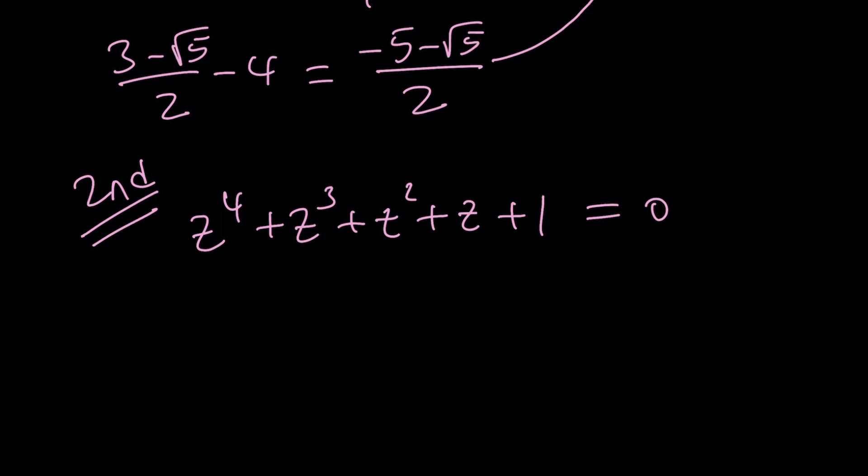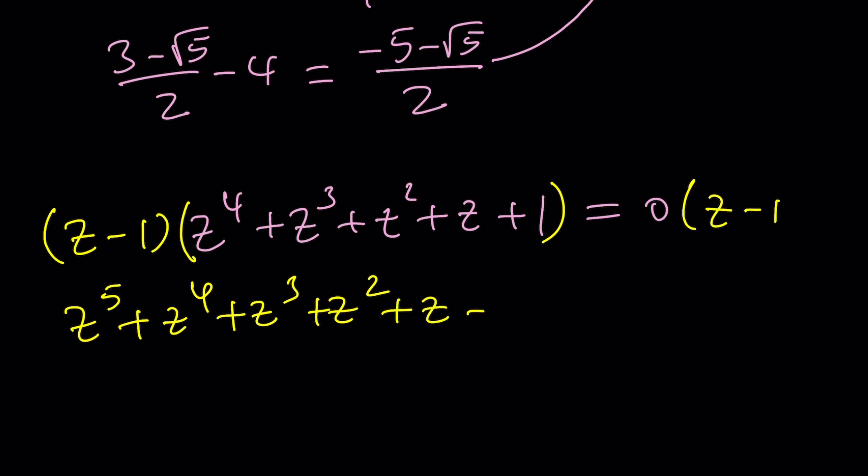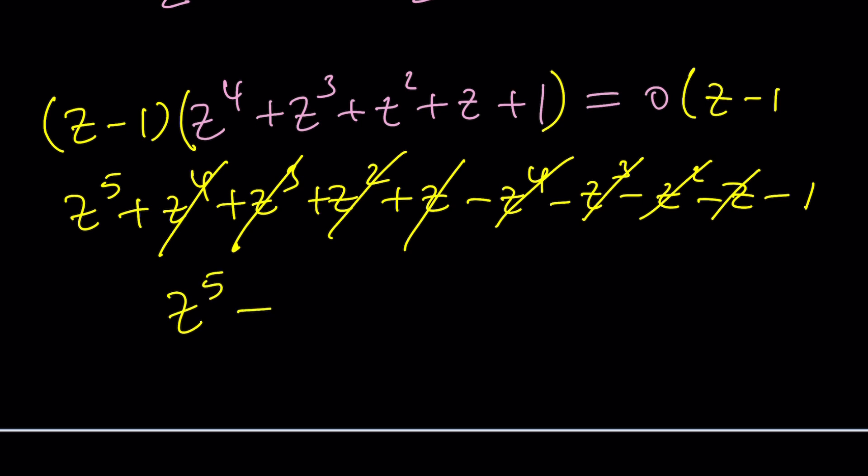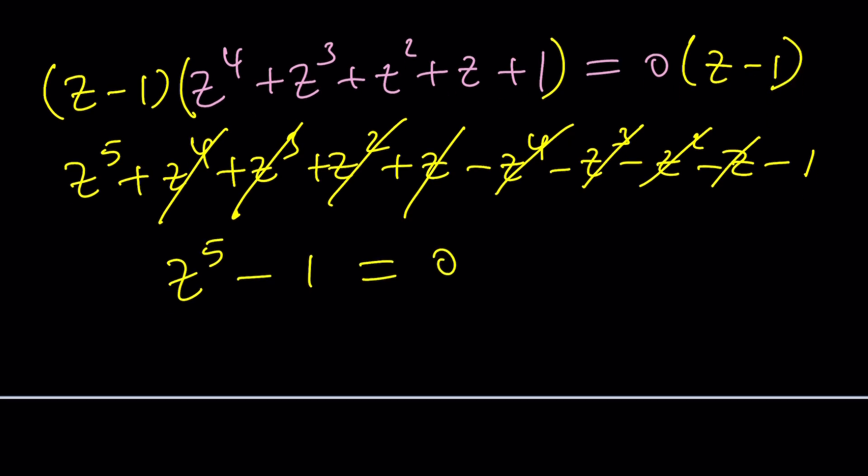Here's what I want you to notice. This equation can be multiplied by z minus 1. So we're going to multiply both sides by z minus 1. Because when we do, this is going to turn into something super nice. When you distribute, you get z to the fifth plus z to the fourth plus z cubed plus z squared plus z, and then minus z to the fourth minus z to the third minus z squared minus z minus 1. Everything cancels out except for two terms, the first and last terms. In other words, this becomes z to the fifth minus 1 equals 0, which means z to the fifth equals 1.